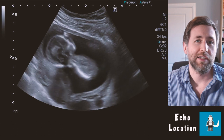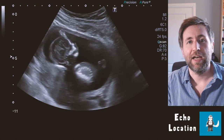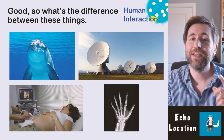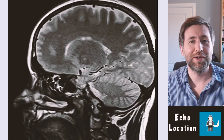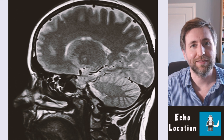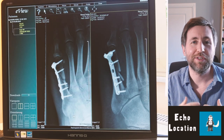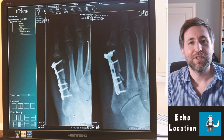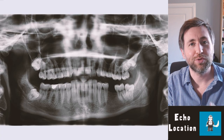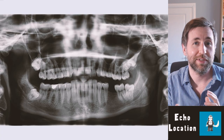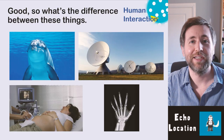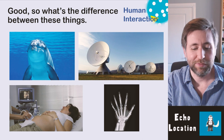The ultrasound scan is scanning an unborn fetus, and that uses pulse-echo location. The odd one out is the X-ray, because that is not a pulse-echo technique — it's a transmission technique using X-rays that either pass through soft tissue or are absorbed by bone, leaving a negative image where we can see the bone.